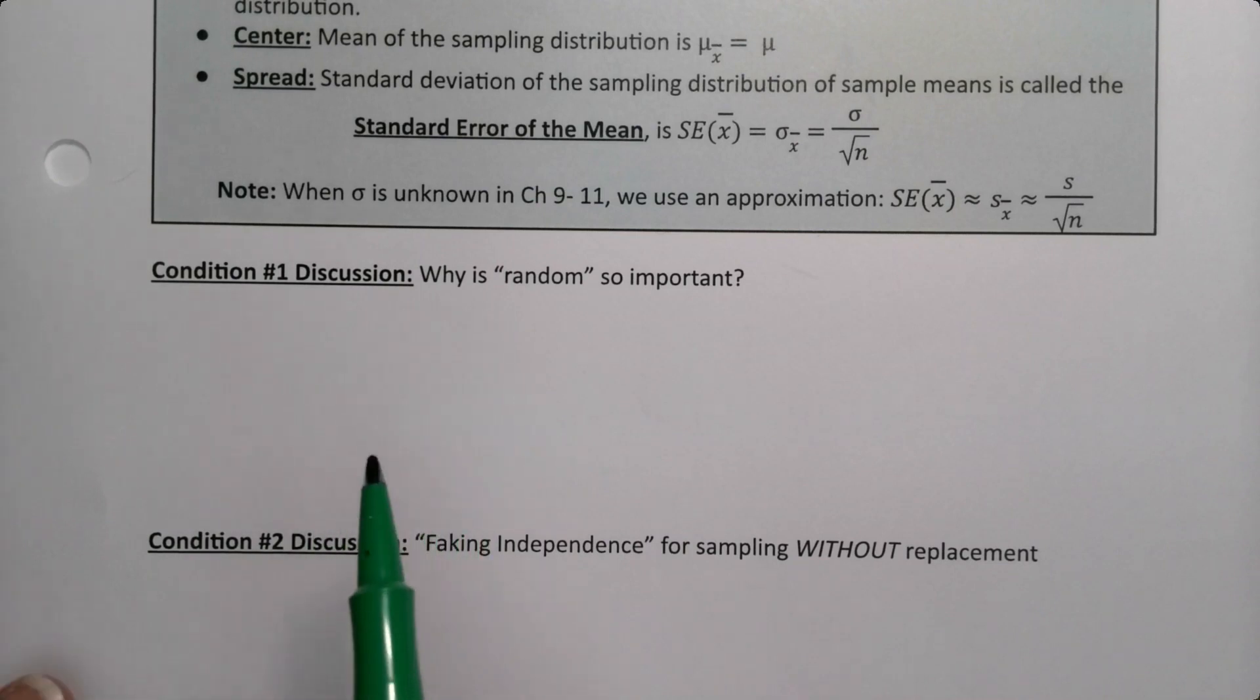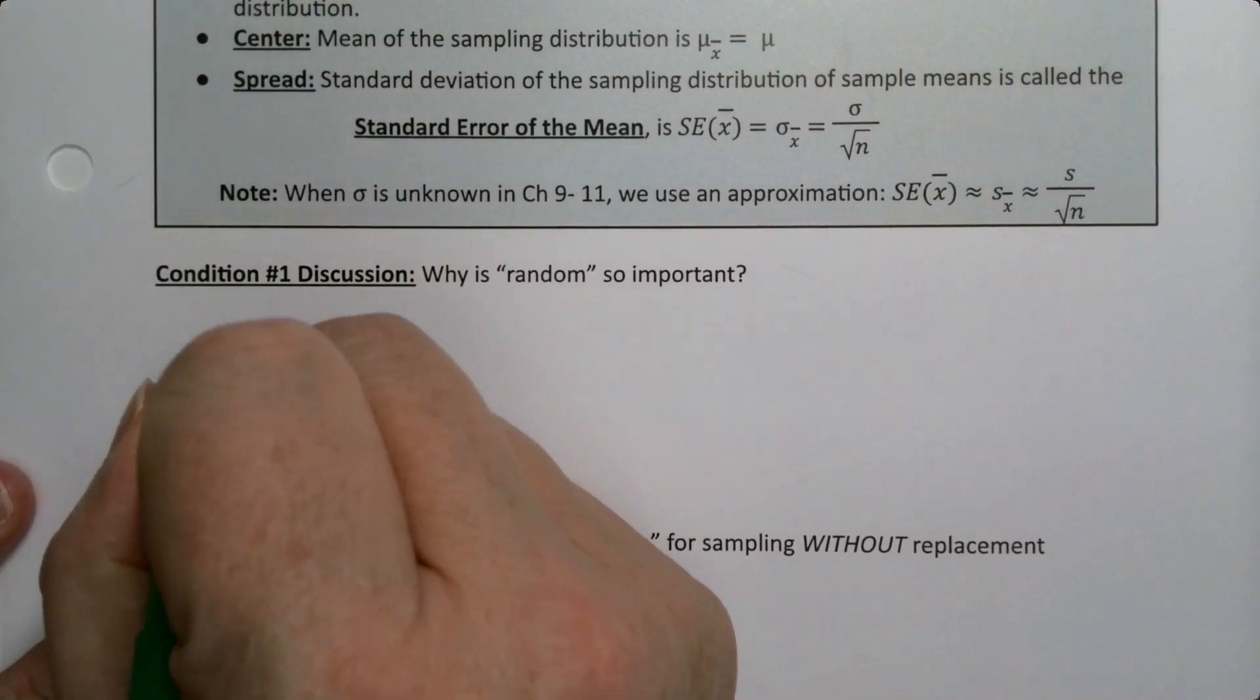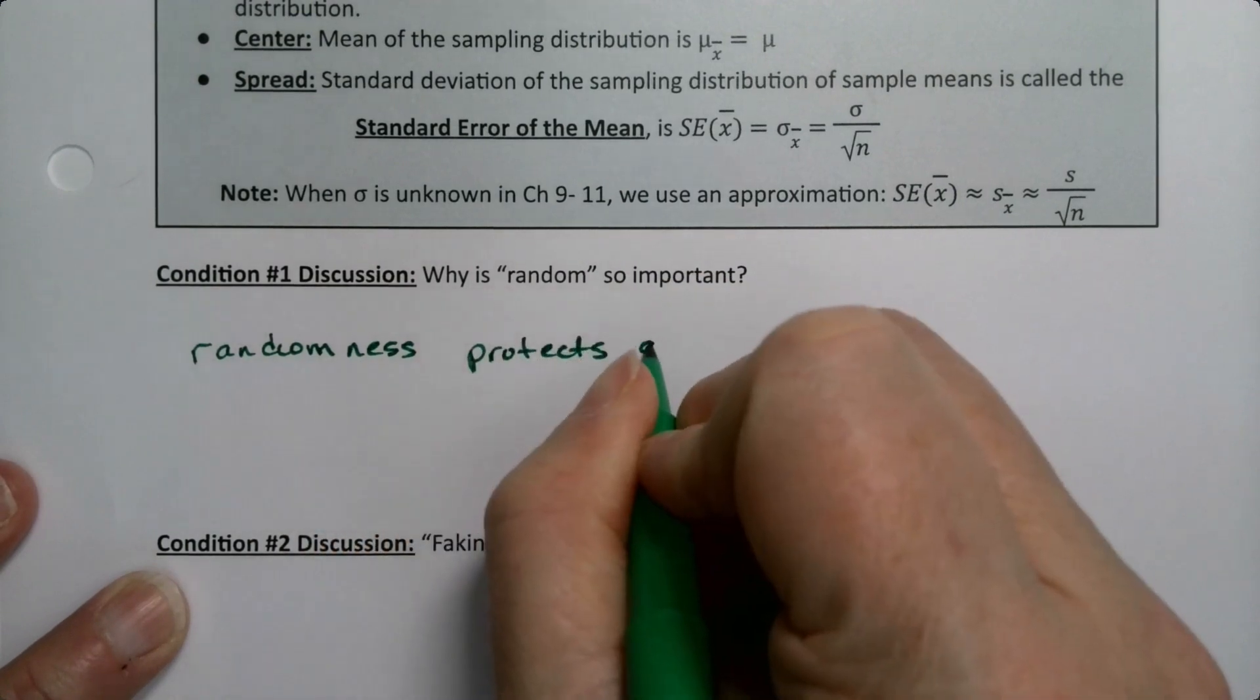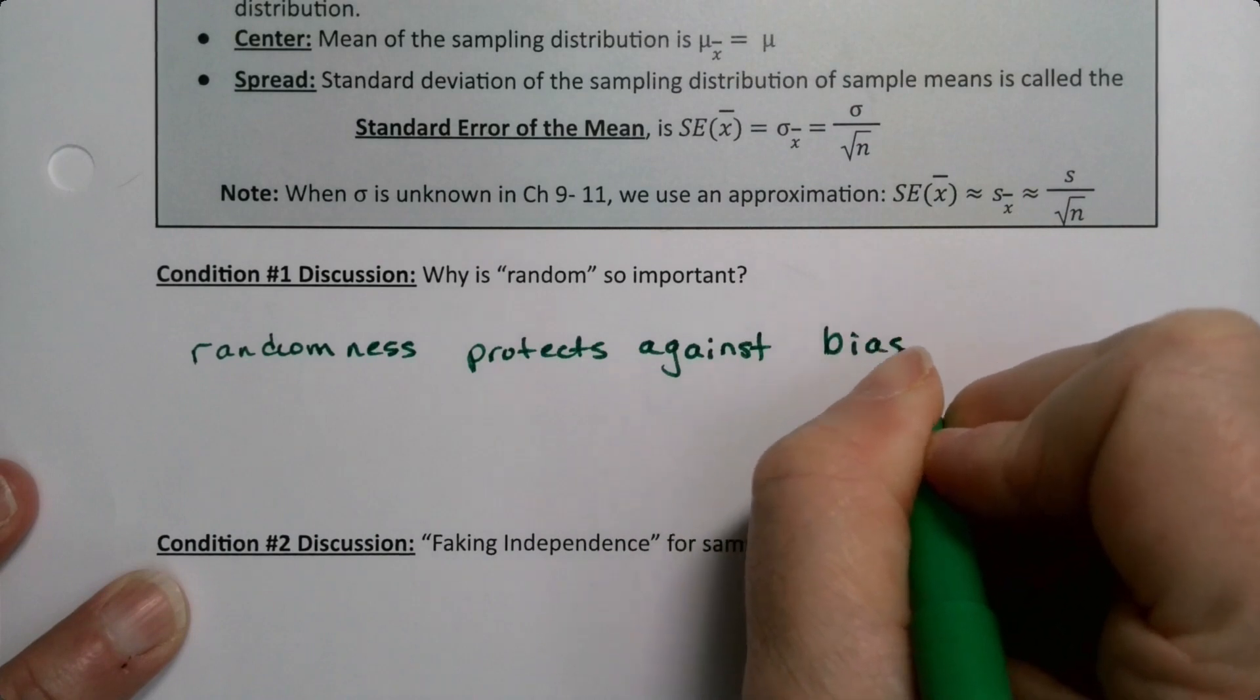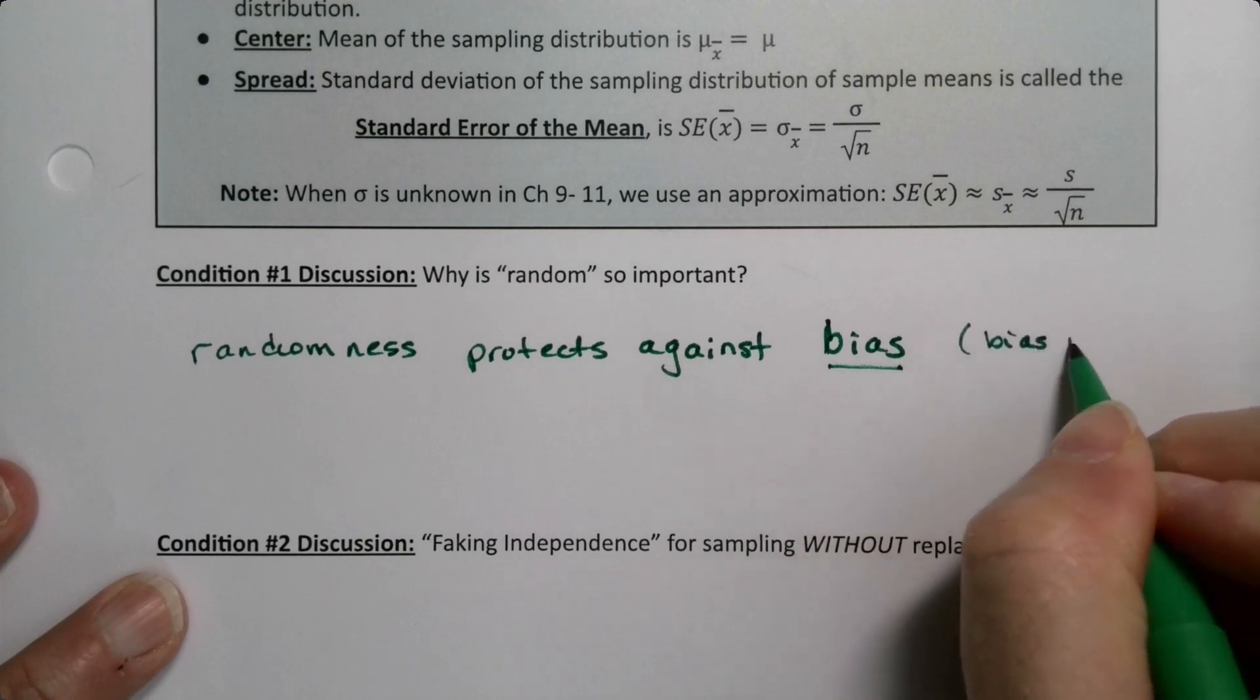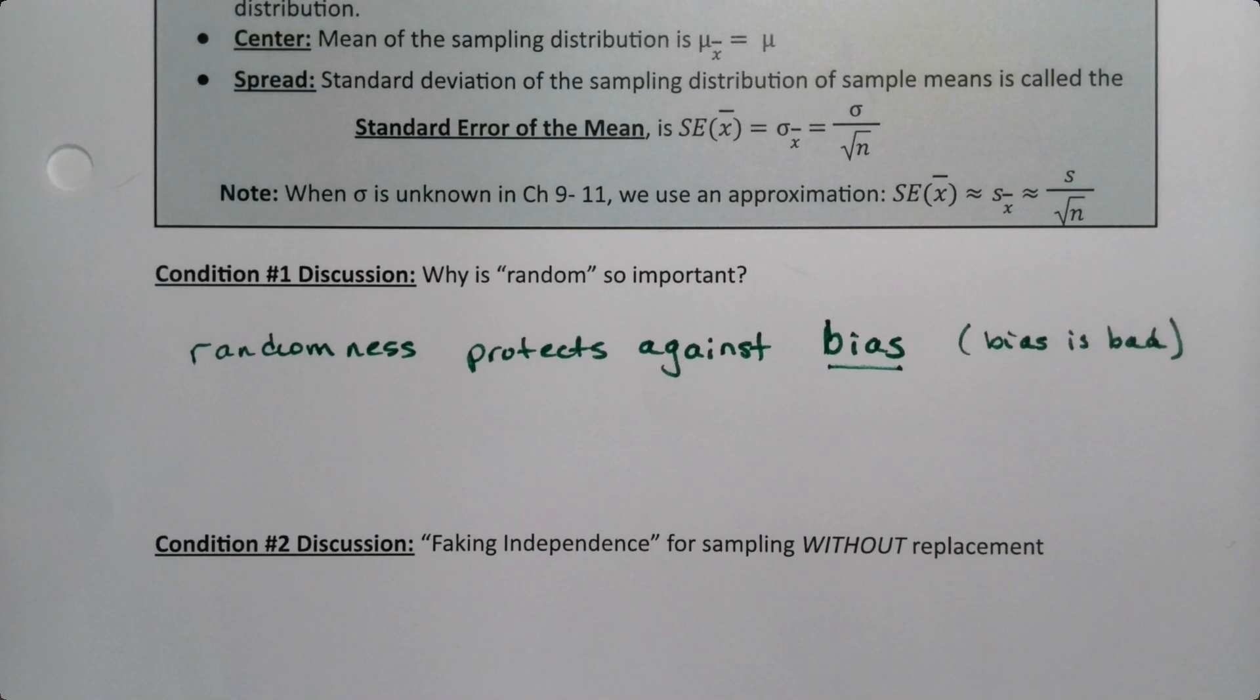Well, we learned back in chapter one that we want random because randomness protects against bias. And bias is always bad. Sampling bias is a big problem. So bias is bad in many aspects of life, including in this case. So we want our samples to be random so that they're not biased.